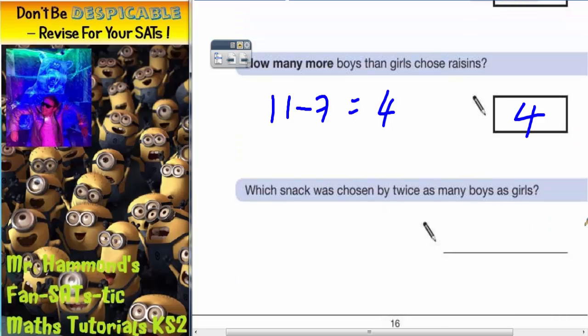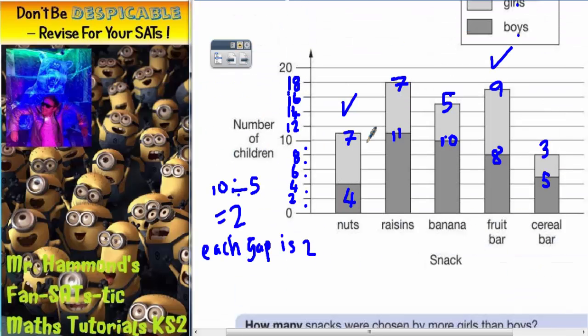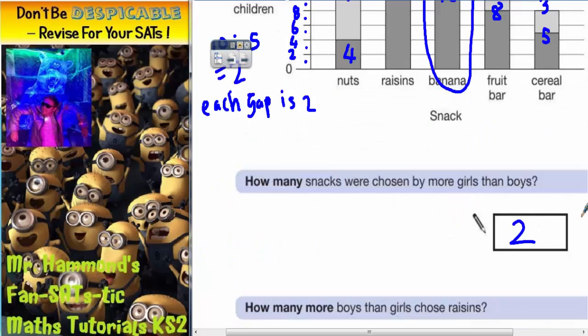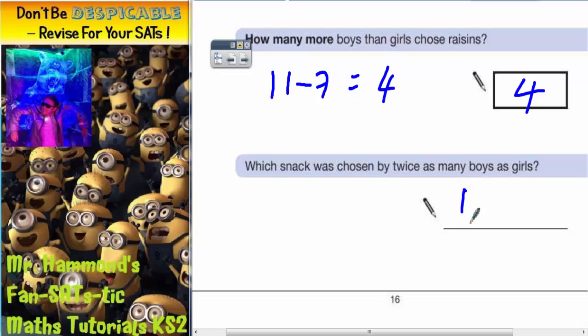Which snack was chosen by twice as many boys as girls? If you look at these numbers, which pair of numbers is one of them twice as many as the other? It's this one here. 10 is twice as many as 5, and that snack is banana. 10 is twice as 5.